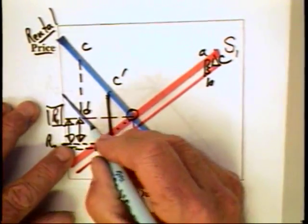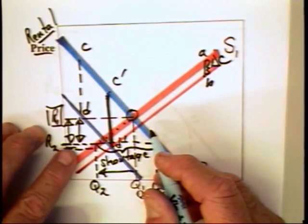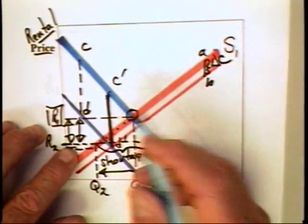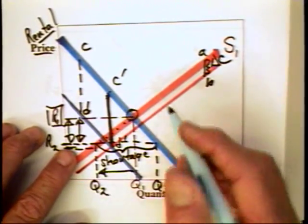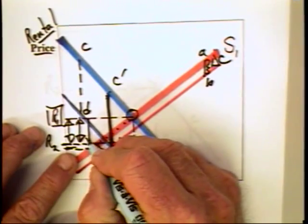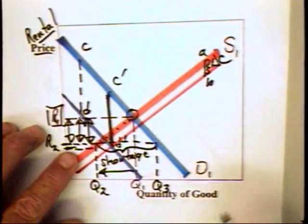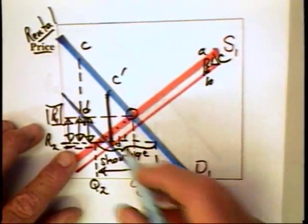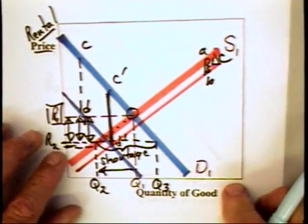On the other hand, the consumers are worse off as a result of the rental payment. The producers are also worse off, but they're not as worse off as they would have been. Without the adjustments in the maintenance, the landlords would have suffered this much in rental payment. They recover some of that reduction in the rental payment by the elimination of maintenance.